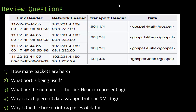Number one: there are four packets — packet 1 of 4, 2 of 4, 3 of 4, and 4 of 4. They don't have to be sent in order, but because they're numbered we can put them back in order. The port being used is port 60, used on both ends — sender and receiver. The numbers in the link header are hexadecimal MAC addresses — you can tell because of letters like 5D and 4F — representing the media access control of the sender and receiver.